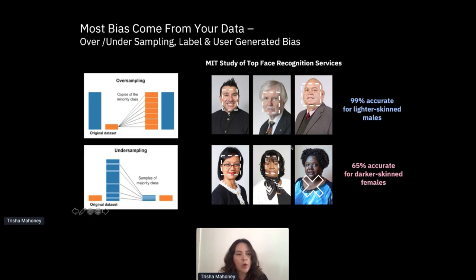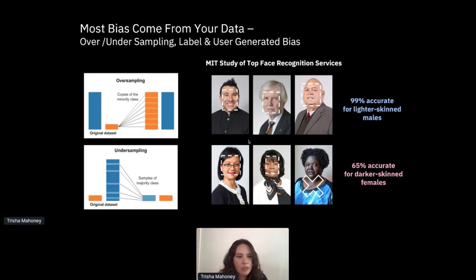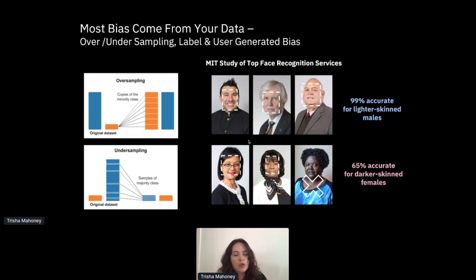When we look at selection bias, where one population is over-represented in a training dataset, MIT recently identified this problem with top facial recognition software, which had been predominantly trained on white male datasets. The results were 99% accurate for lighter-skinned males and only 65% accurate for darker-skinned females. You can imagine, if law enforcement is using wide-scale facial recognition, what the implications would be if you're a darker-skinned female.